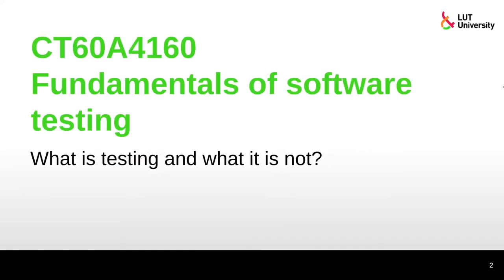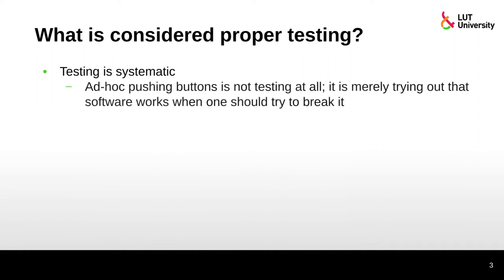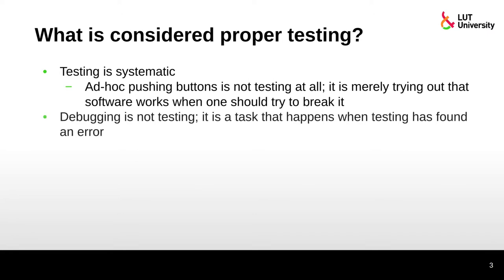Fundamentals of software testing: what is testing and what is it not? Testing is systematic — you cannot just randomly push buttons and hope bugs are found. Randomly clicking buttons and writing text into input fields is not testing. One should systematically try to break the software. Debugging is not testing; debugging happens after testing has found an error, to figure out why it happened and how to fix it.